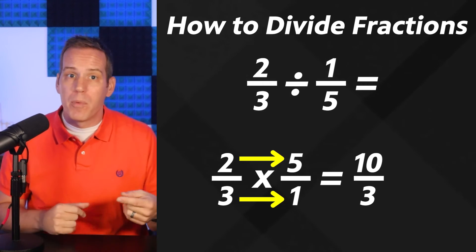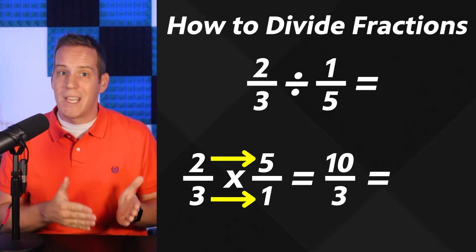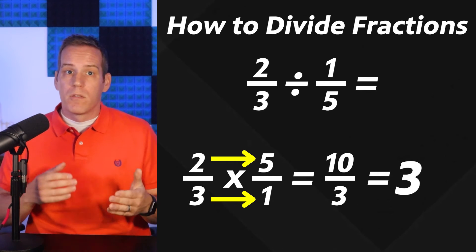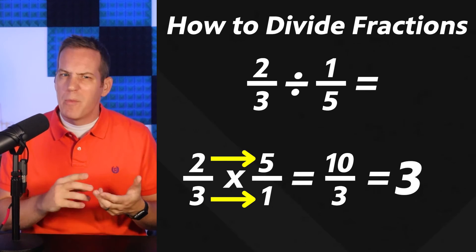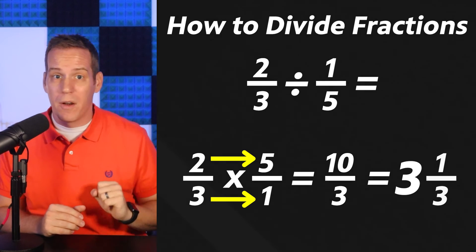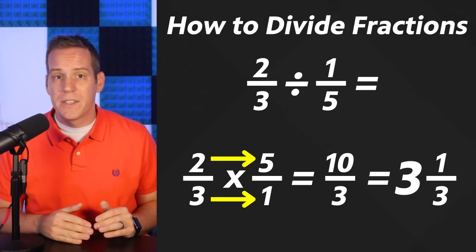Now we simply turn it back into a mixed number and we've got our answer. Three times what gets you the closest to ten? That'd be three, that's your whole number. Now three times three is nine, how many more to get up to ten? One, that is your numerator, and your denominator will stay the same. So your final answer here is three and one-third.